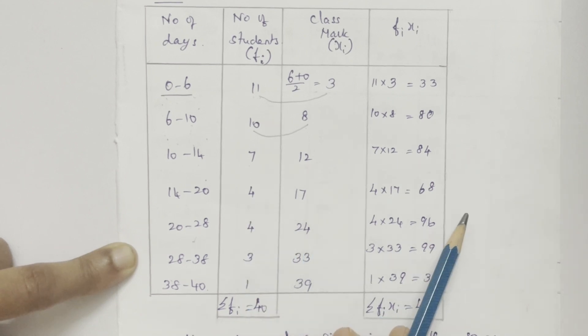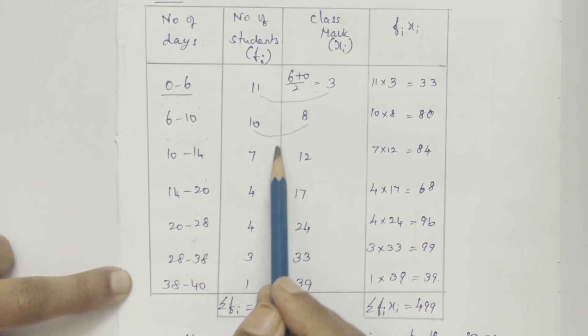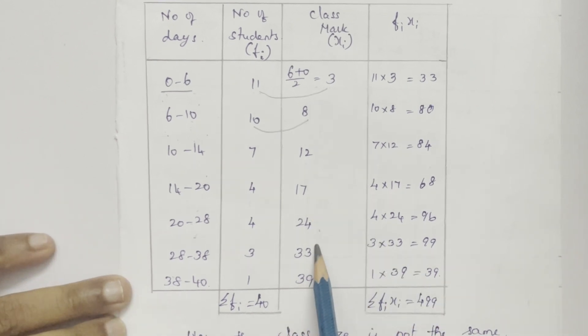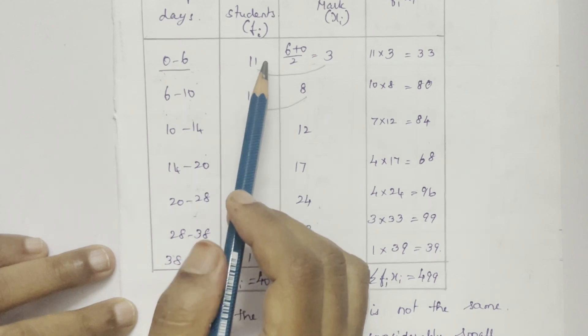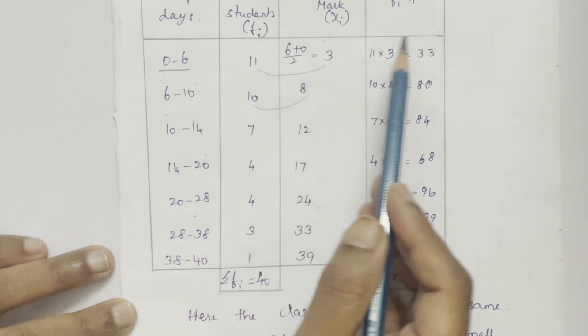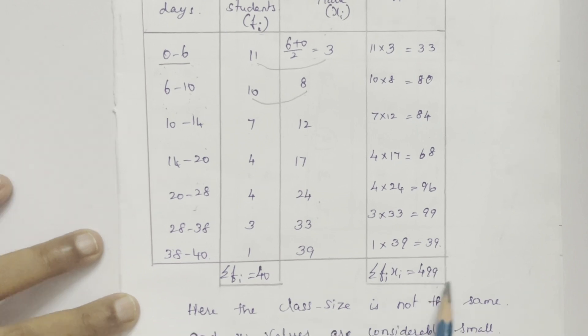So it is easy to multiply. Even though the class size is different, we have smaller numbers in xi, so we can go with the direct method. So I have multiplied fi and xi here and added fi xi.